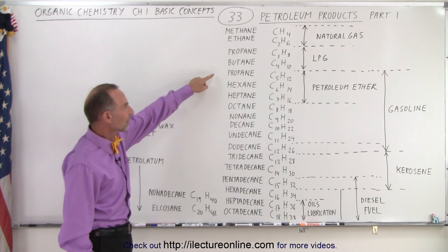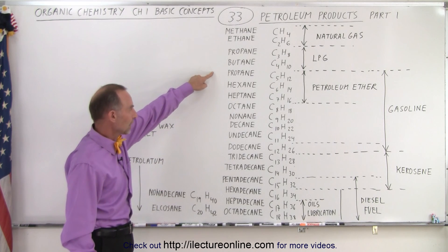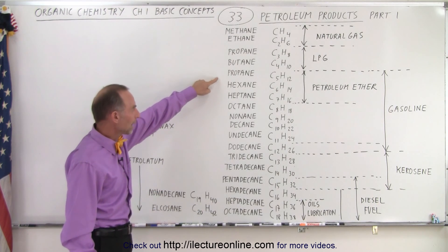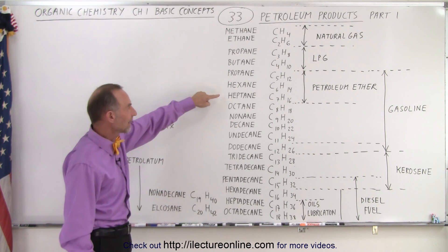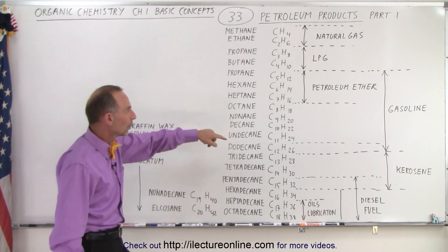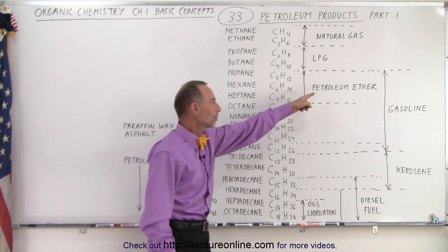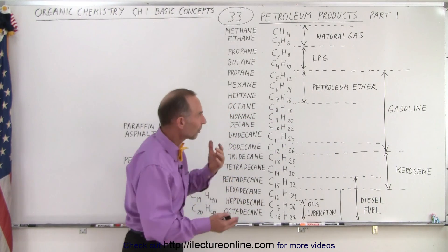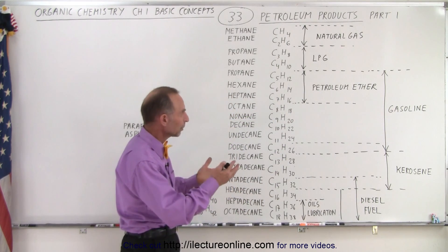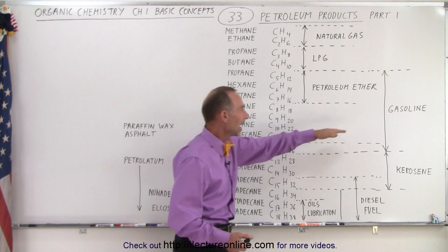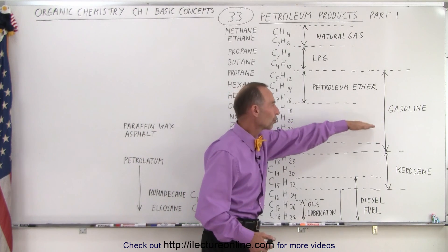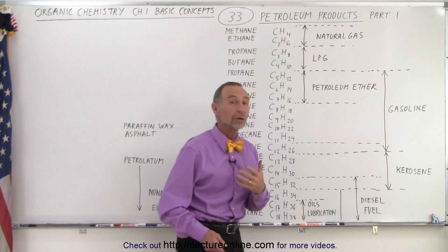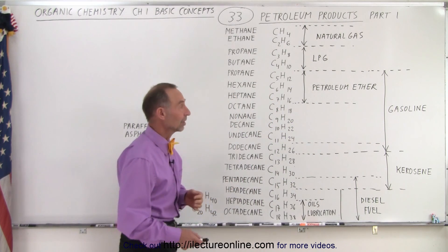Then we have the next group — pentane, hexane, and heptane — which are called petroleum ether. They sit somewhere between LPG and the range where it begins to turn into something we can use for gasoline.